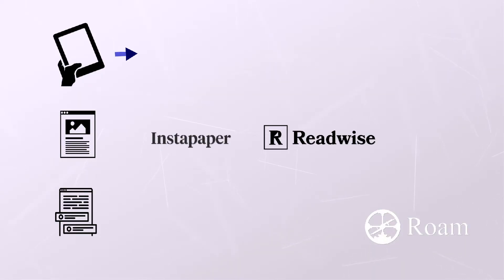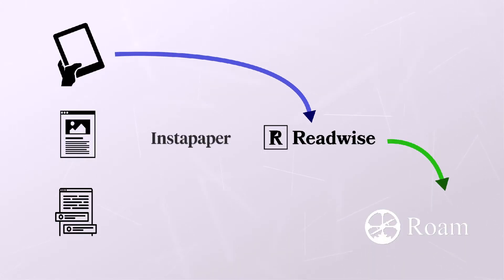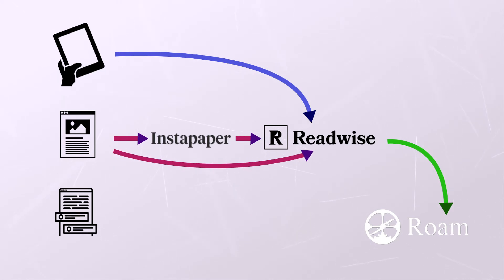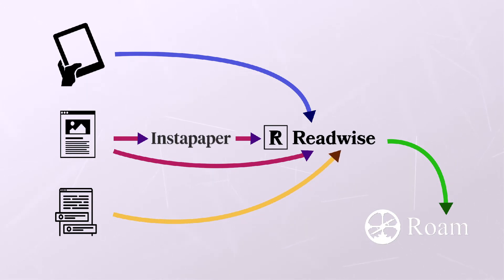So here's the entire summary. For books: Kindle goes to Readwise, goes to Roam. For articles: either save them to Instapaper, highlight stuff in Instapaper, which sends it to Readwise, which sends it to Roam — or if you're reading something in real time, you can just highlight and right-click to send it directly to Readwise, which goes directly into Roam. Any other information you find around the web can be sent directly to Readwise which goes to Roam, or it can go to Instapaper where you take a second look, decide what to highlight, which then goes to Readwise, which then goes to Roam.